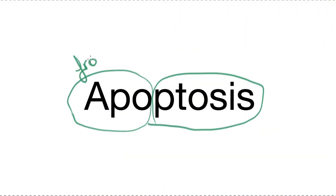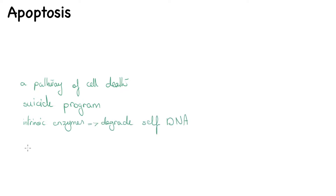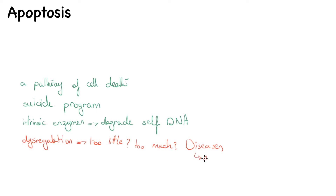Apoptosis comes from Greek: 'apo' meaning 'from' and 'ptosis' meaning 'falling,' so it literally means 'falling off.' Apoptosis is a pathway of cell death induced by a tightly regulated suicide program in which cells destined to die activate intrinsic enzymes that degrade the cell's own nuclear DNA and nuclear cytoplasmic proteins. Its dysregulation — meaning too little or too much — is the basis of several diseases including autoimmune diseases, cancers, neurodegenerative diseases, and many others.